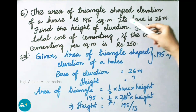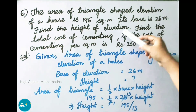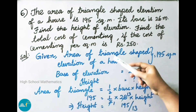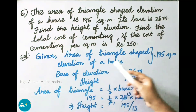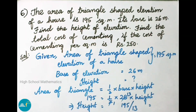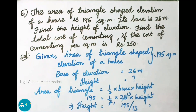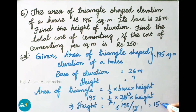See now question number 6. The area of a triangular shaped elevation of a house is 195 square meters and its base is 26 meters. Find the height. Using area formula: 195 = half into 26 into H. After cancellation: height equals to 195 divided by 13. Working out: 13 times 15 is 195. Therefore height of elevation is 15 meters.